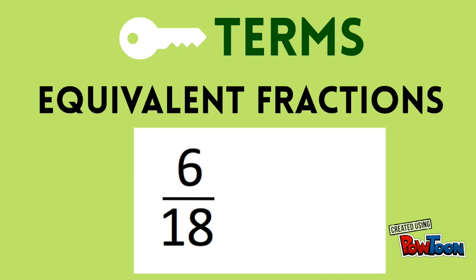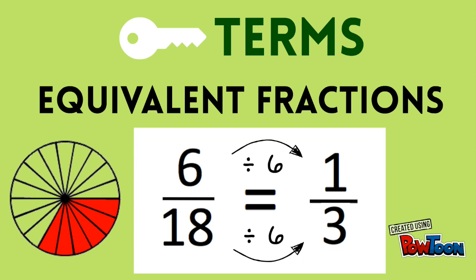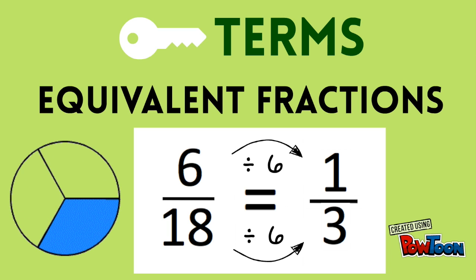You can also change a fraction into an equivalent fraction by dividing the numerator and denominator by the same number. Since both 6 and 18 are divisible by 6, I can divide to find an equivalent fraction. 6 eighths is the same as 1 third. Notice how the shaded part, or the fraction of the circle, does not change when I turn 6 eighths into 1 third.